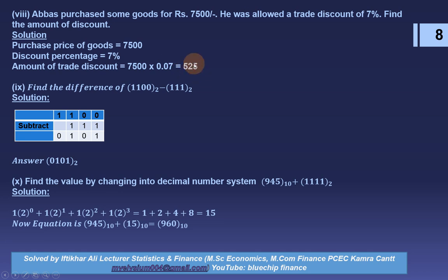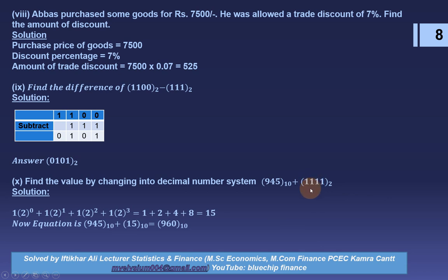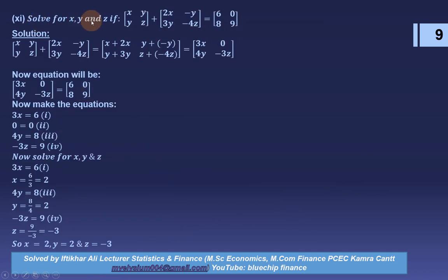Find the difference of binary 1100 minus binary 111. The answer is 0101. Then find the value by adding decimal 945 and binary 1111. Convert binary 1111 to decimal: 1×2⁰ + 1×2¹ + 1×2² + 1×2³ = 15. So 945 + 15 = 960 decimal.